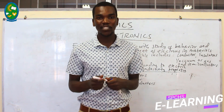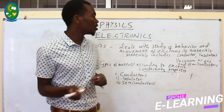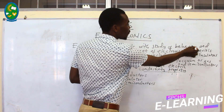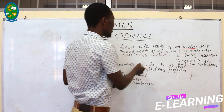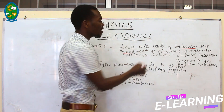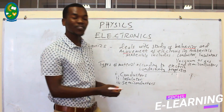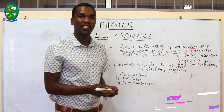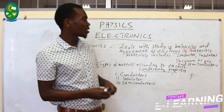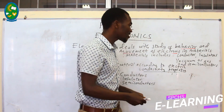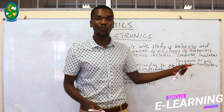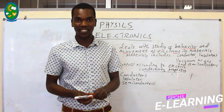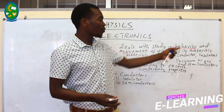Electronics is a branch of physics which deals with the study of behaviors and movement of electrons in a material. These materials include conductors, insulators, vacuum, and semiconductors.